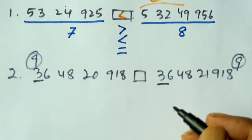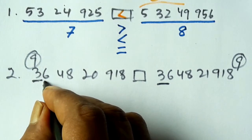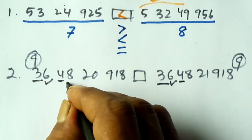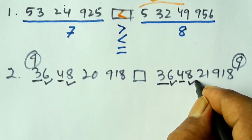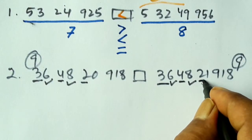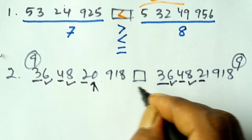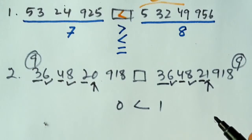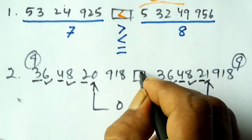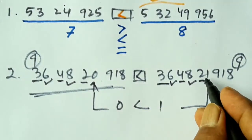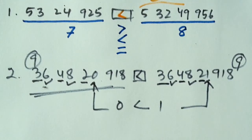The first digits: 3 and 3. Then 6 and 6. Then 4 and 4. Then 8 and 8. Then 2 and 2. Now, here is 0 and the corresponding digit is 1. Since 0 is less than 1, we put the less than mark — this number is less than the second number.